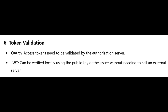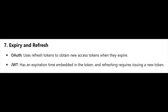Token validation — OAuth access tokens need to be validated by the authorization server. JWT can be verified locally using the public key of the issuer without needing to call an external server. For expiration and refresh, OAuth uses refresh tokens to obtain new access tokens when they expire, while JWT has an expiration time embedded in the token and refreshing requires issuing a new token.